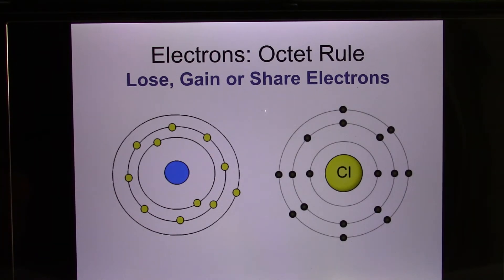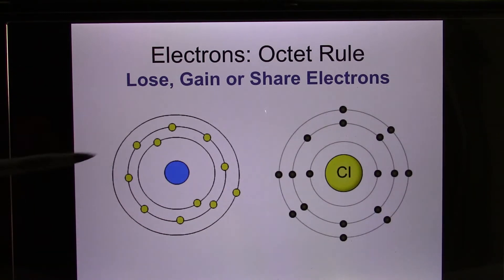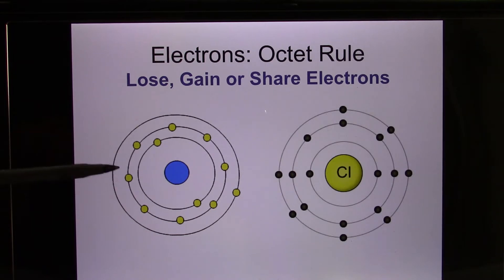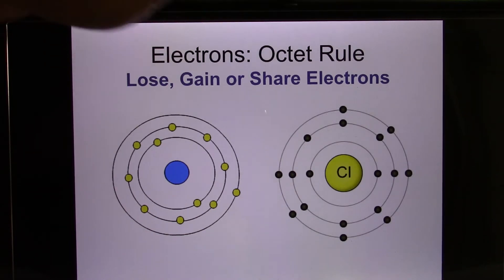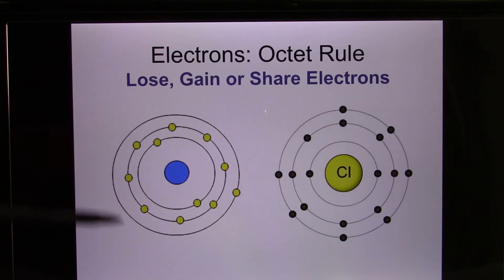Most atoms have a valence shell that is not full, and they need to make it full — so they need to lose, gain, or share electrons. That's when we start to have chemical bonds. They need to do their best to follow the octet rule — the two-eight-eight rule.